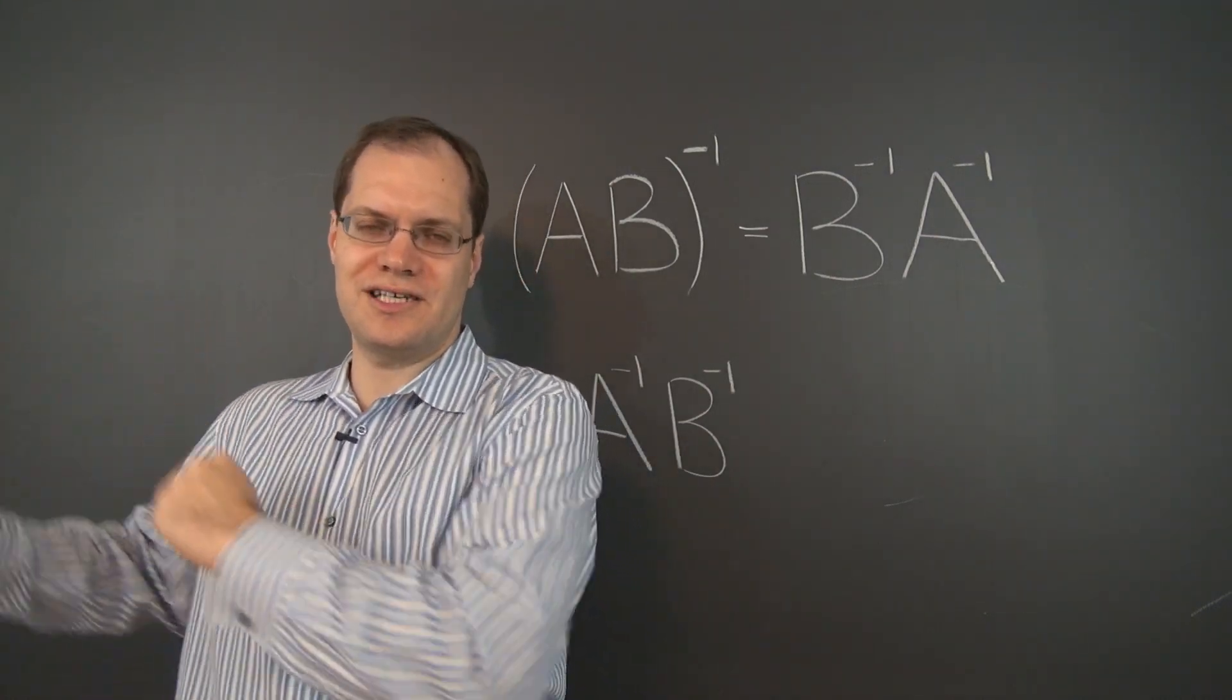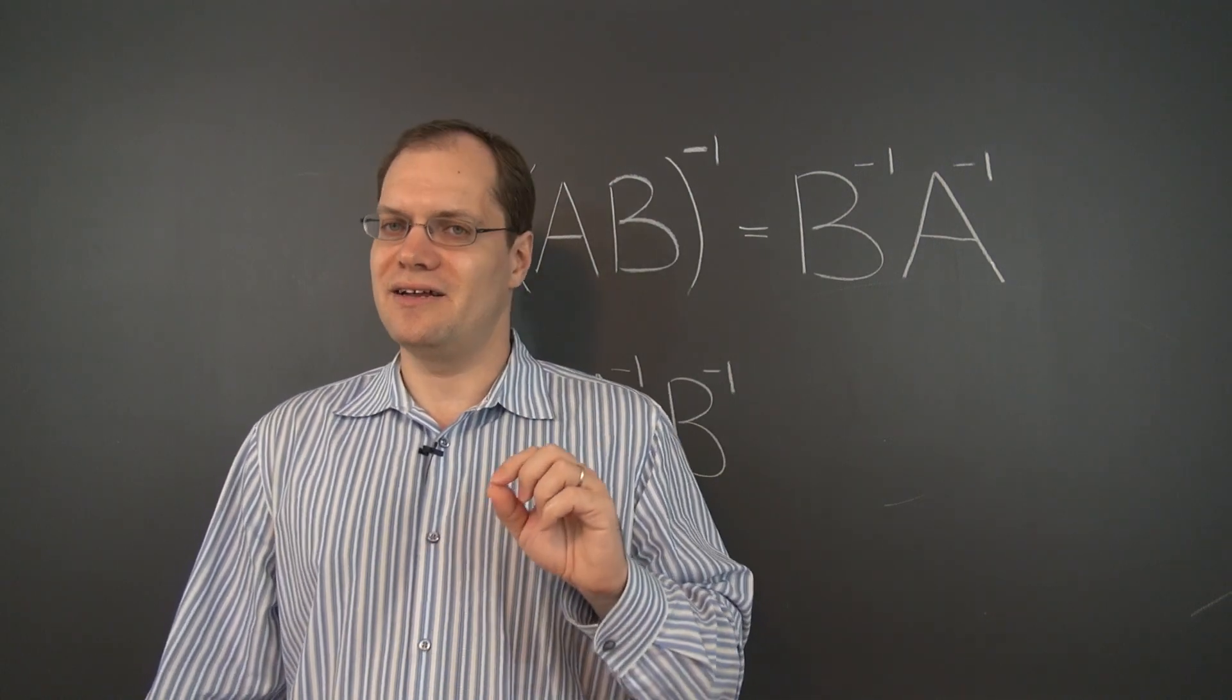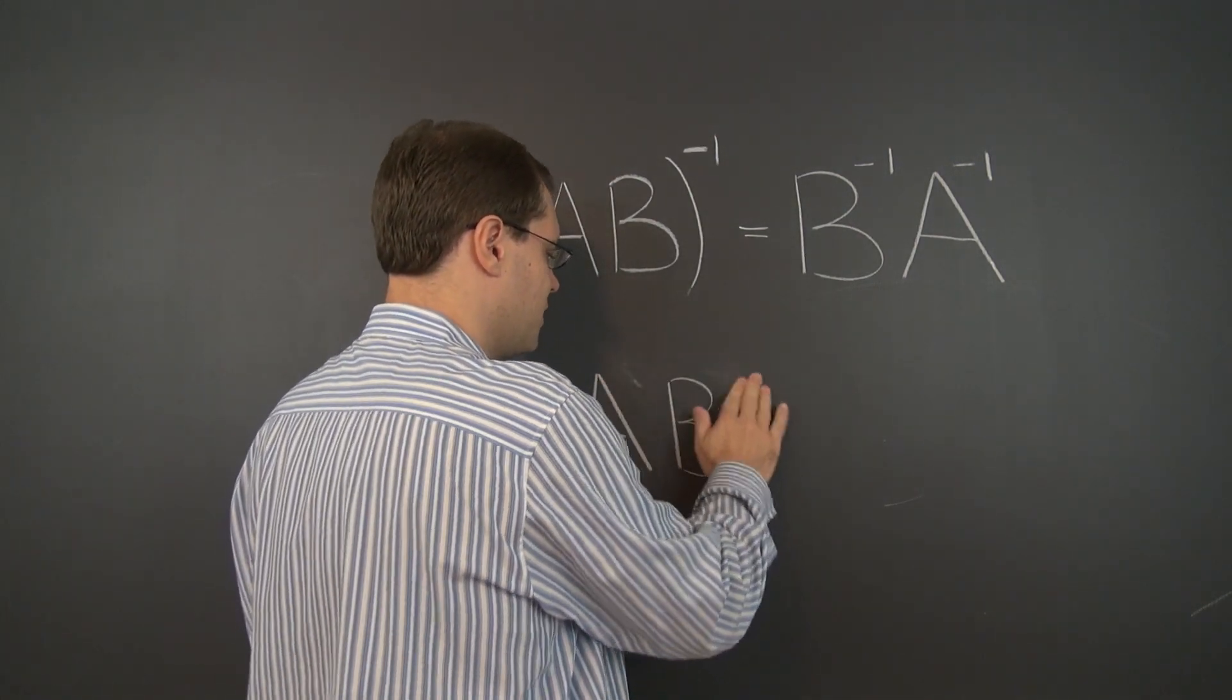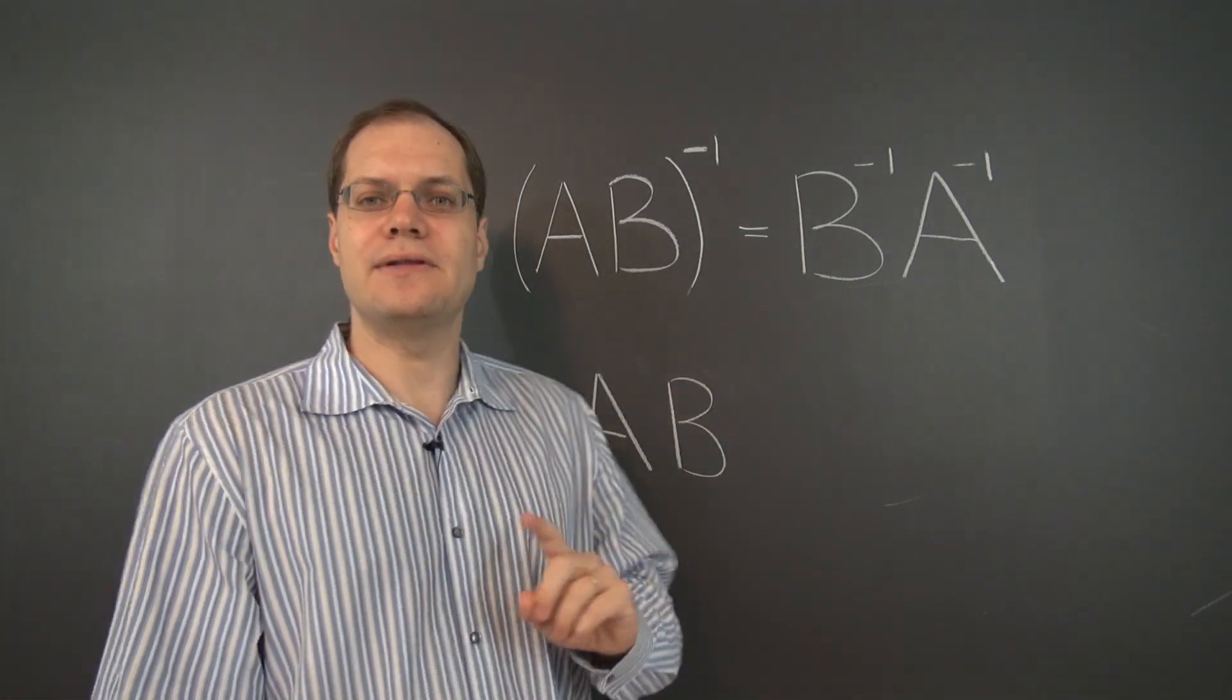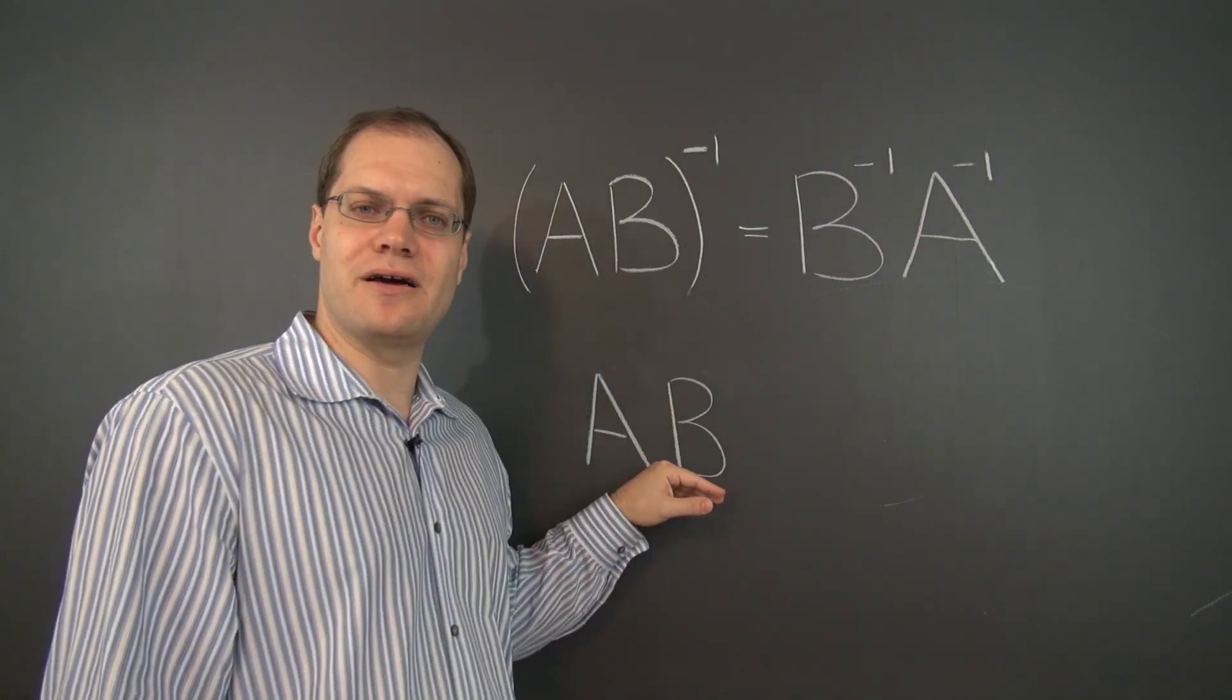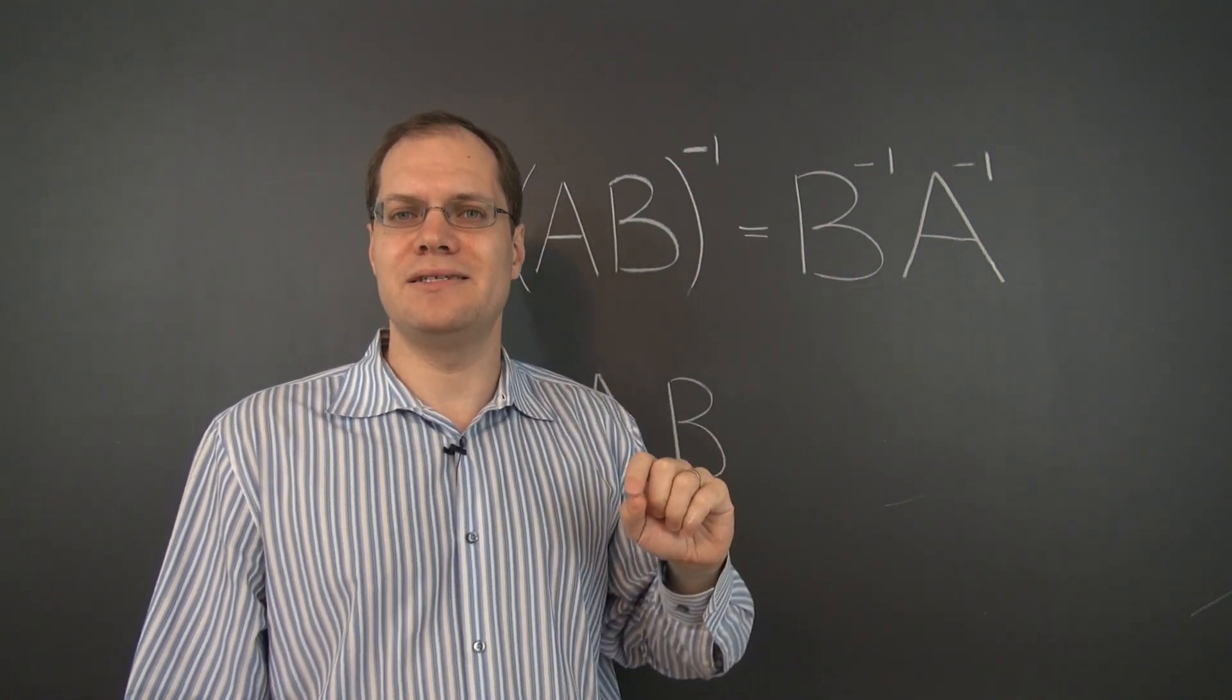Usually I designate proofs to separate videos, but this will be so short and so neat that it really belongs in this video. So, I will erase the inverses and I will say, suppose now we have the product AB. I will now show you, I will now show that if I multiply this product AB by B inverse A inverse, the result will be identity.